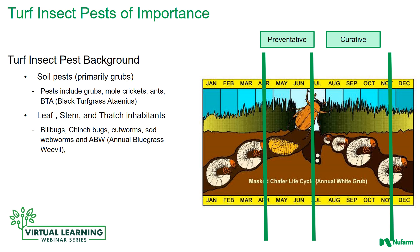Some of the insects that cause trouble in the thatch area and stems include billbugs, chinch bugs, cutworms, sod webworms, and the annual bluegrass weevil. The chart to the right shows a simple life cycle of the masked chafer.